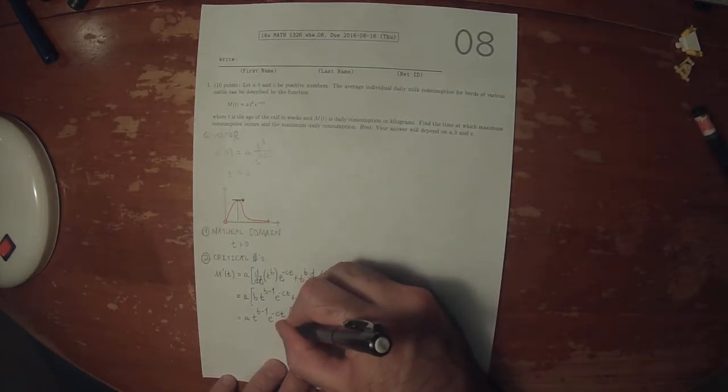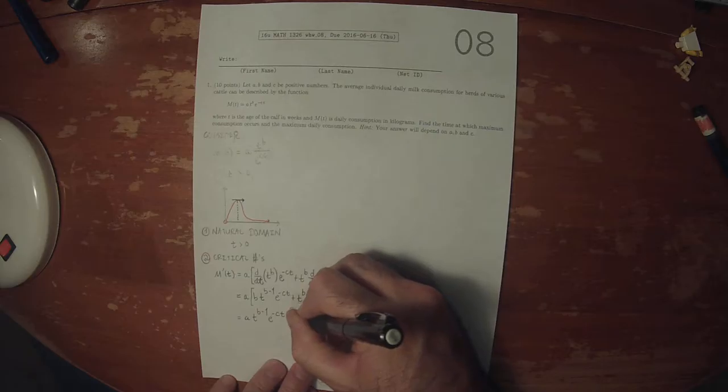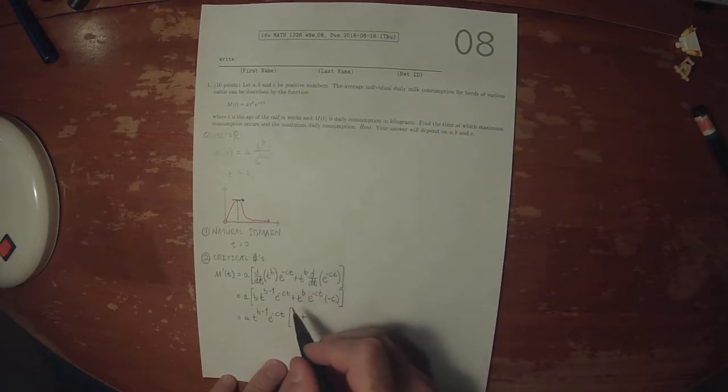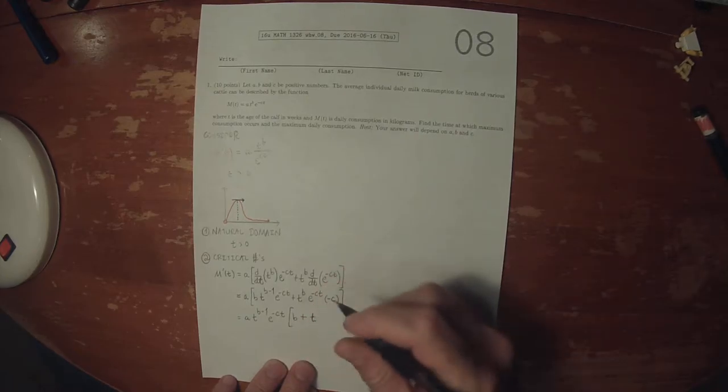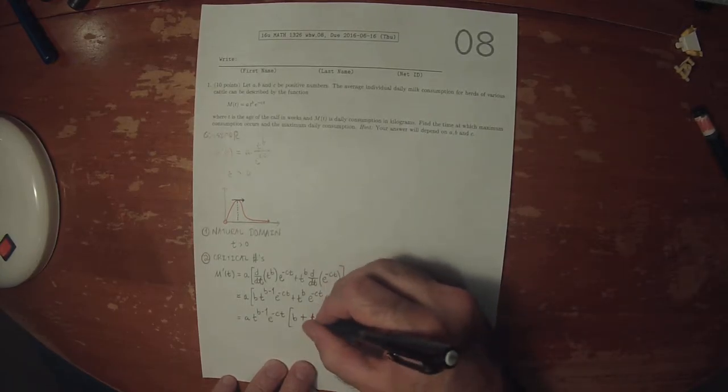So when you factor this factor out and that factor out, B is all that remains for the first term. And then plus, so we factored out B minus 1 of these, so there's just one left. So that'll be T times negative C.